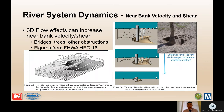3D flow effects can also increase near-bank velocity and shear, which are important for estimating erosion. This includes bridges and trees as shown in the picture to the right. Figures from Federal Highways show the complex flow patterns that can occur around bridge structures and how those can create interesting scour and erosion patterns. This needs to be considered when assessing erosion.